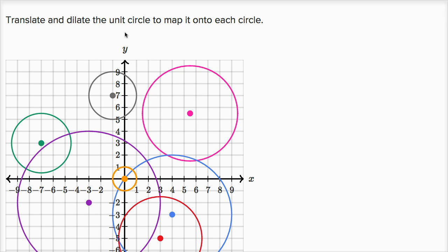We're asked to translate and dilate the unit circle to map it onto each circle. So this is the unit circle right over here. It's centered at zero comma zero. It has a radius of one. That's why we call it a unit circle.